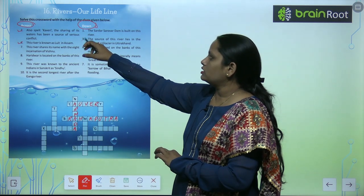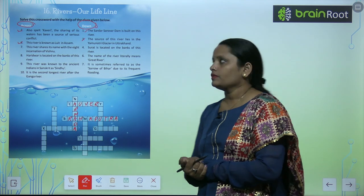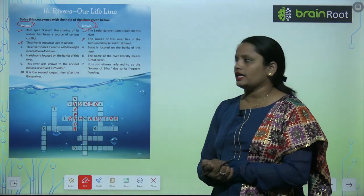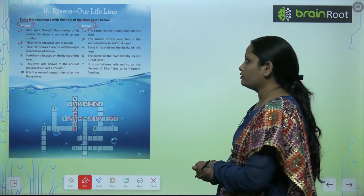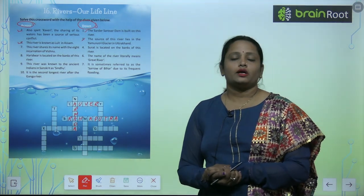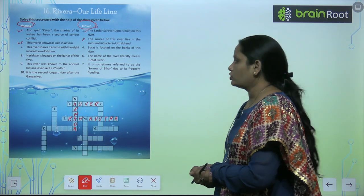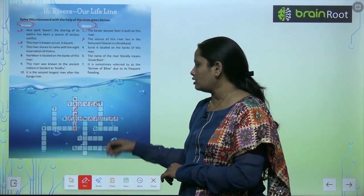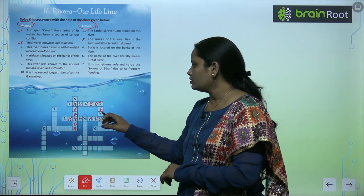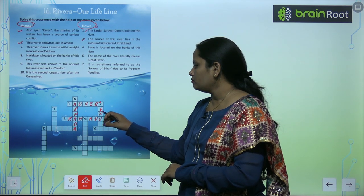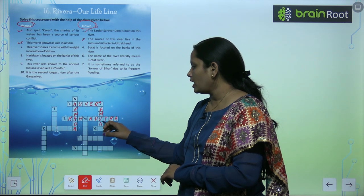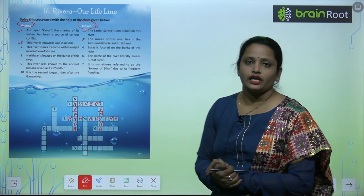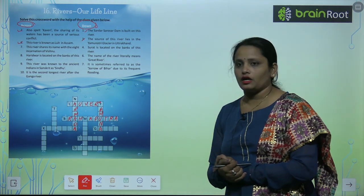Now let's look at number 3. The source of this river lies in the Yamnotri glacier in Uttarakhand — yeh jo river hai, iska source Yamnotri glacier se aa raha hai jo ki Uttarakhand mein hai. So children, this is number 3 and the name of this river is Yamuna — Y-A-M-U-N-A.